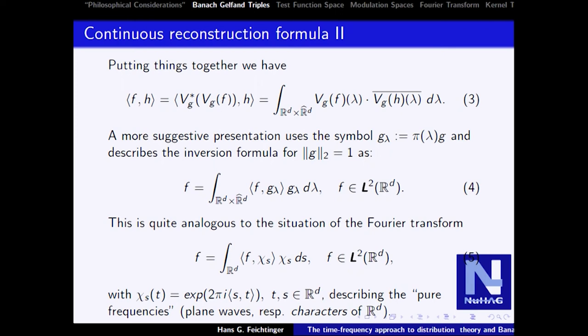For audio signals, this one-dimensional signal lives in time direction and frequency direction. For image processing you have something four-dimensional. The opposite of matrix multiplication with continuous variables is an integral — you integrate this with g-lambda — doing synthesis. You have to be careful with the meaning. Usually 95 percent of talks about this theory say it has to be understood in the weak sense.